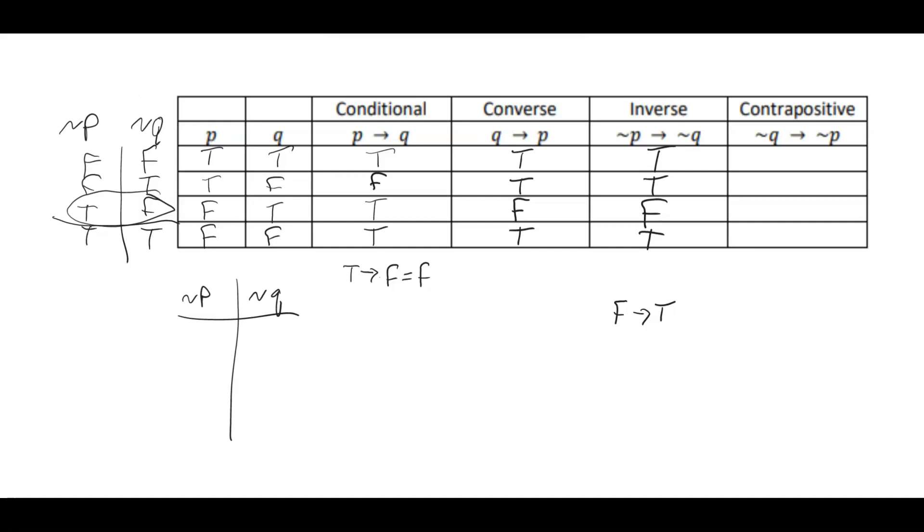True implies false. Contrapositive: not Q implies not P. The implies, you can assume they're all true. And then again, look for a true implies false. The not Q implies not P is going in this direction. We're looking for a true implies false, and it's right there. That's the one that's bad. That one gets changed.